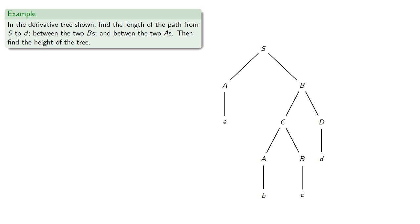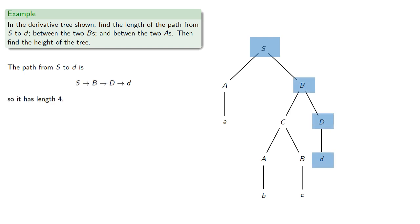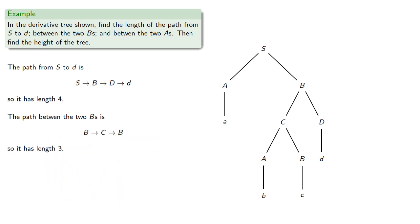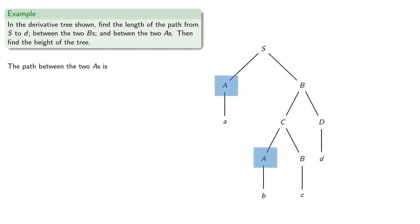So for example, in the derivative tree shown, let's find the path between S to D, between the two B's, and between the two A's, and then find the height of the tree. The path from S to D has length 4. The path between the two B's has length 3. The path between the two A's is non-existent.